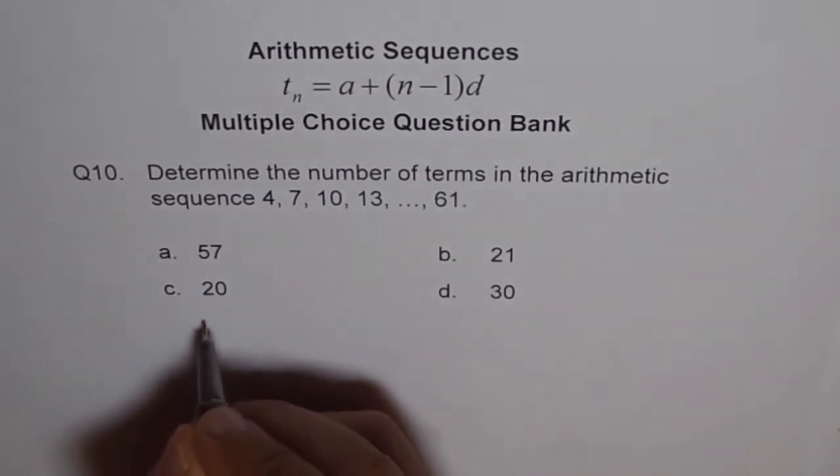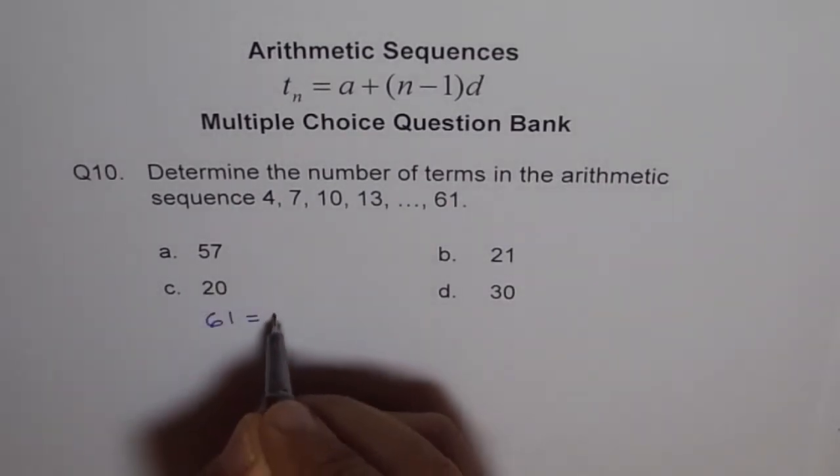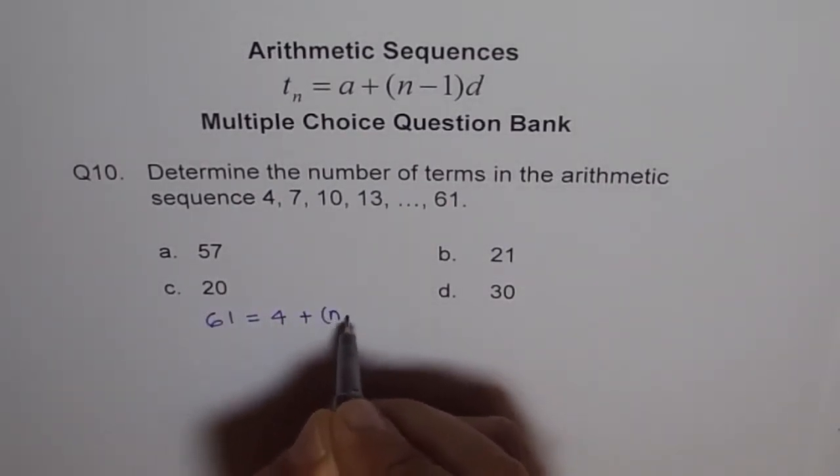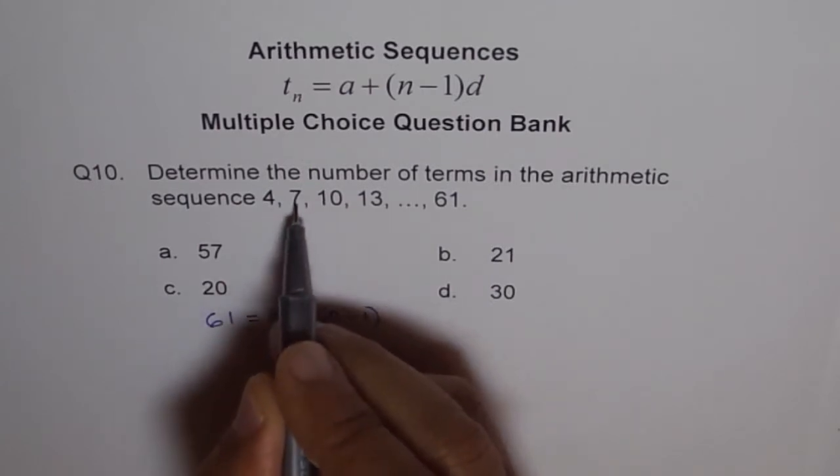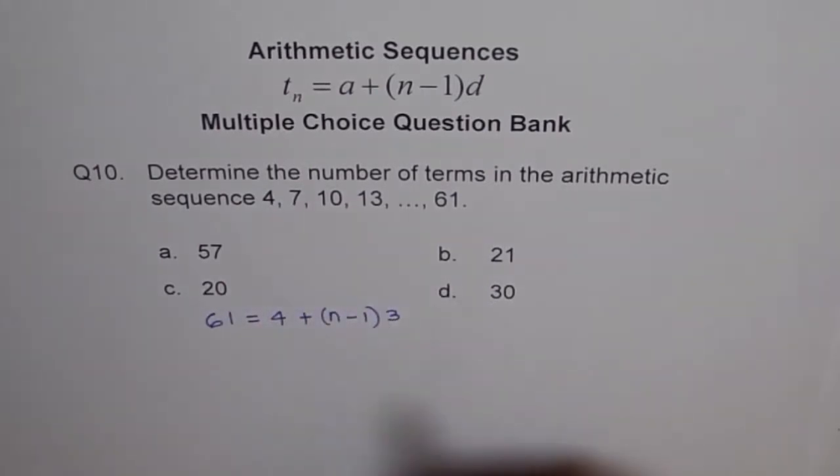So we'll put this and work it out. So 61 equals, a is 4 for us, plus n minus 1, and common difference is 7 minus 4, which is 3. So we'll solve this.